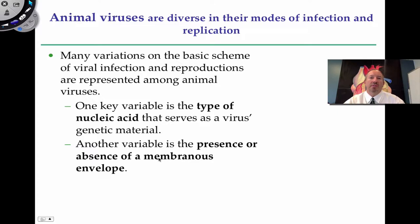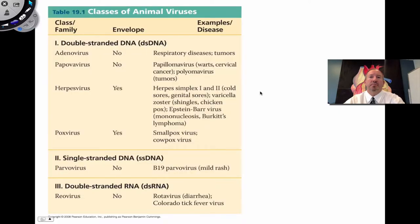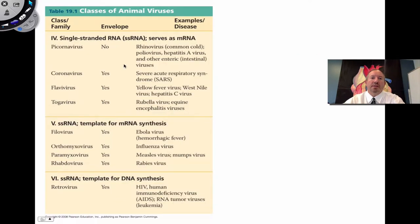Another difference is whether the animal virus just has a protein capsid surrounding its nucleic acid, or whether that capsid is also surrounded by a membranous envelope containing glycoproteins for attachment. If you wanted to, you could pause the video and take a look at this table of typical viruses: double-stranded DNA viruses and the diseases they cause, single-stranded DNA, double-stranded RNA, and single-stranded RNA.